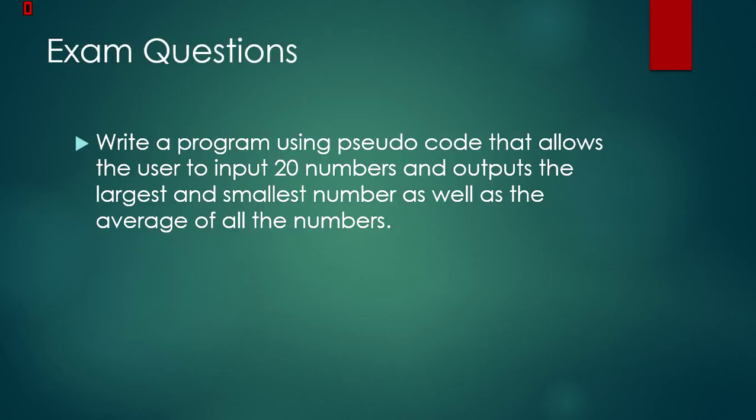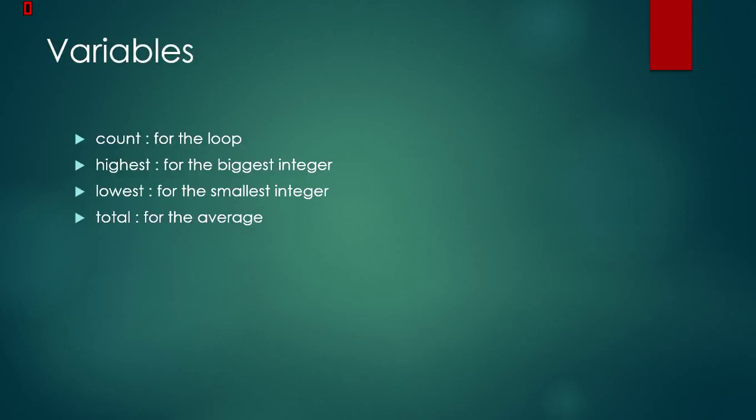First, you have to find out what your variables will be. Count. You need count for the loop, for how many times the program will execute. Highest for the biggest integer, like where to store the biggest integer. Lowest as well because you need to output the smallest number. And total for the average.